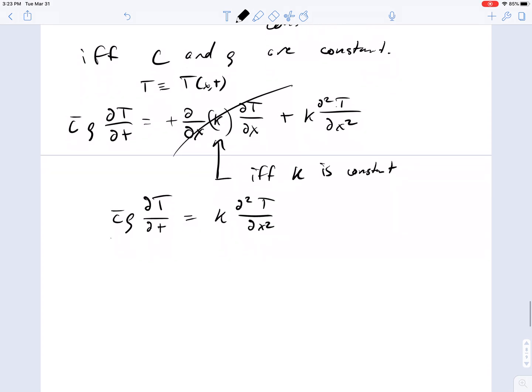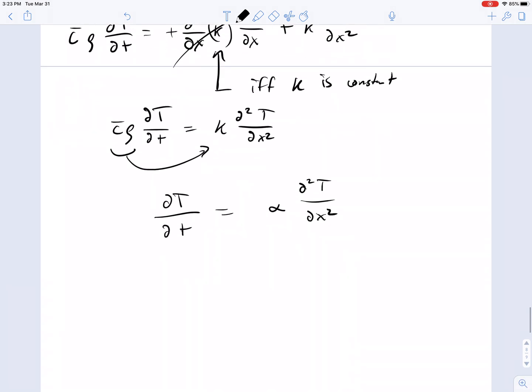And if you divide through, you'll end up with del temperature del time equals alpha del squared temperature del x squared. And this term is the thermal diffusivity.